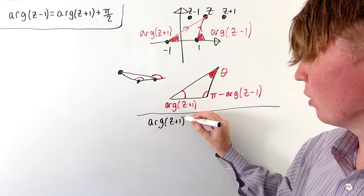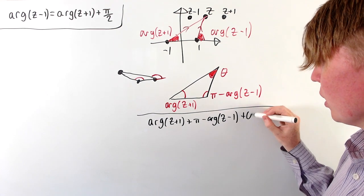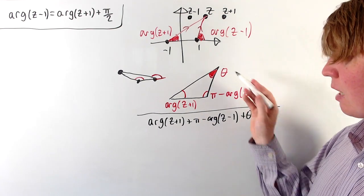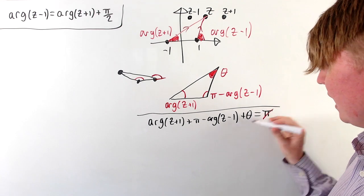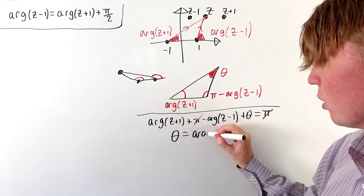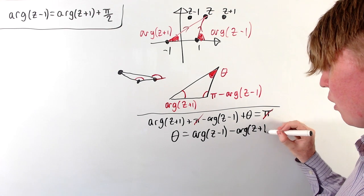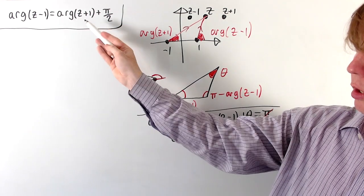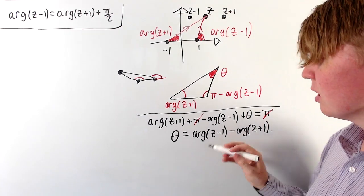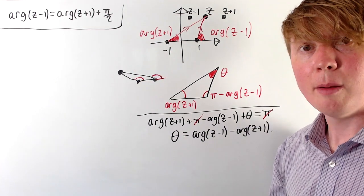Using the fact that the sum of angles in a triangle is pi radians, we have: the argument of z plus 1, plus pi minus the argument of z minus 1, plus theta, equals pi. The pi cancels on each side, and we rearrange to get theta equals the argument of z minus 1 minus the argument of z plus 1. But this was our original equation, so the argument of z minus 1 minus the argument of z plus 1 equals pi over 2, meaning theta equals pi over 2 radians.